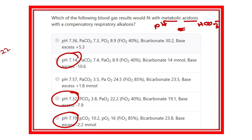We need to find bicarbonate less than 22. Bicarbonate of 14 millimoles per liter is less than 22 — this may be an option. Option D shows 19.1 — this may be another option. However, 20.3 is close to normal, so that option is discarded. We are now left with two possible options.